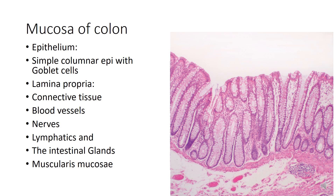The mucosa of the colon has no plica circularis and no villi — it is flat. It is lined by simple columnar epithelium containing columnar absorptive cells called colonocytes and goblet cells. The lamina propria contains a large number of crypts of Lieberkühn. The upper one-third of each crypt is lined by colonocytes and goblet cells, while in the lower two-thirds goblet cells are predominant. Some enteroendocrine cells and undifferentiated stem cells are also present in the deeper parts of these glands. Paneth cells are entirely absent — crypts of Lieberkühn in the large intestine lack Paneth cells.